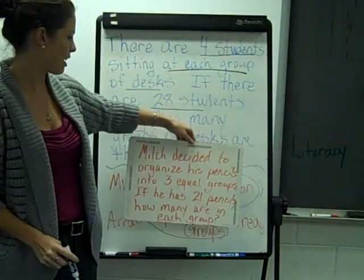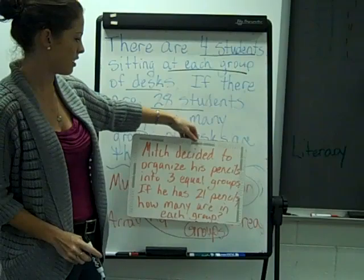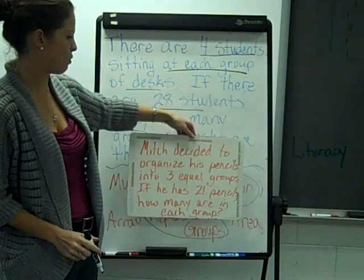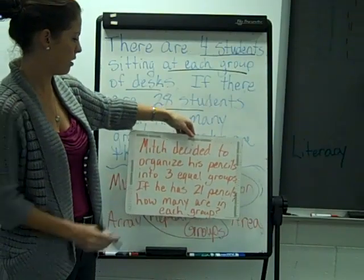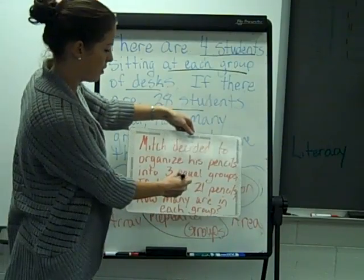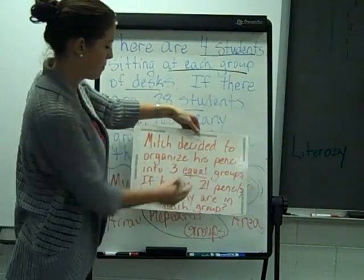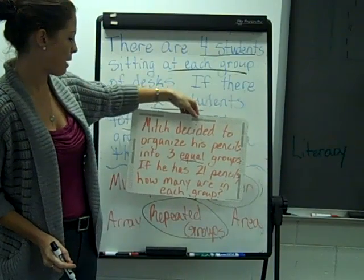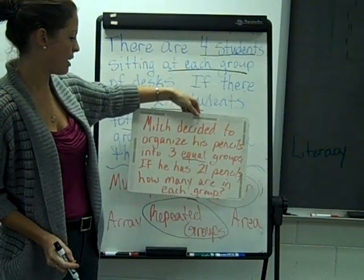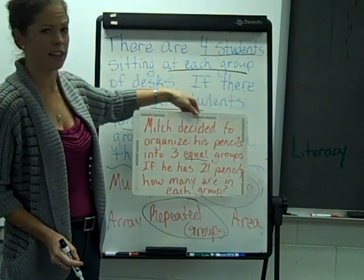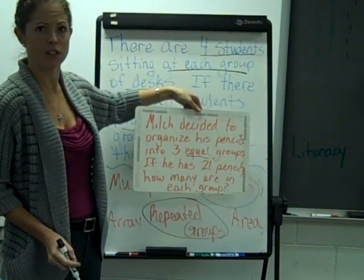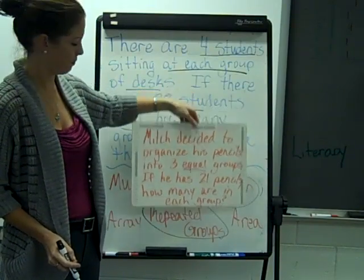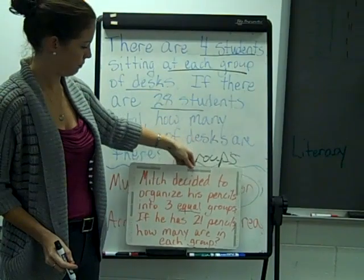Now you try. Mitch decided to organize his pencils into 3 equal groups. Equal is important. If he has 21 pencils, how many are in each group?